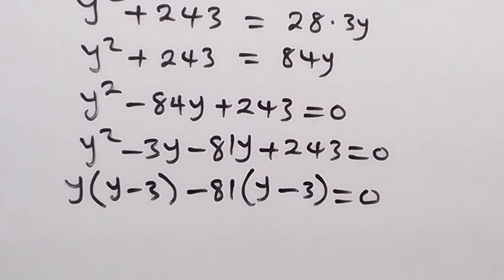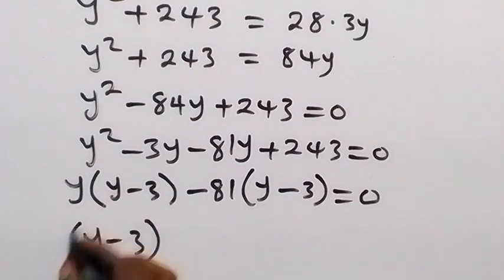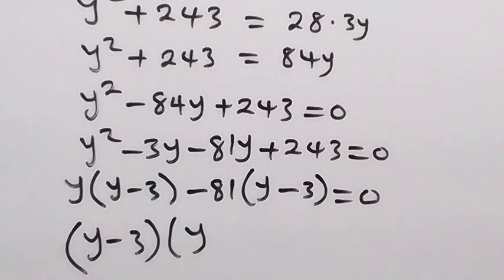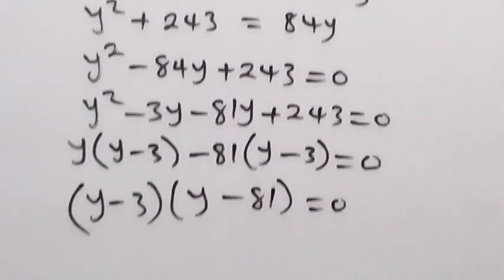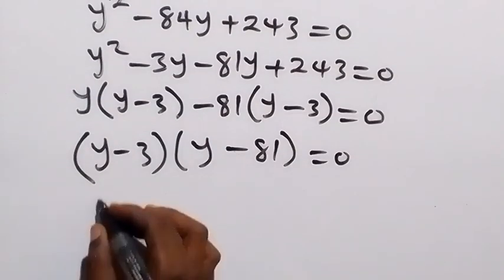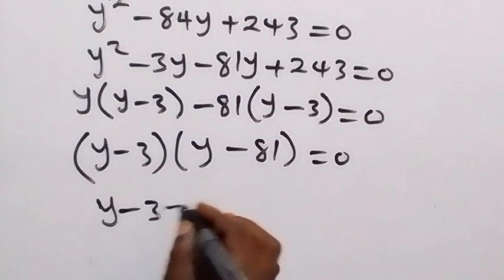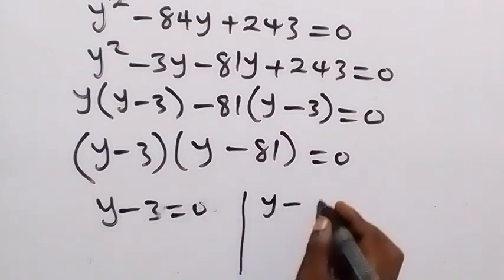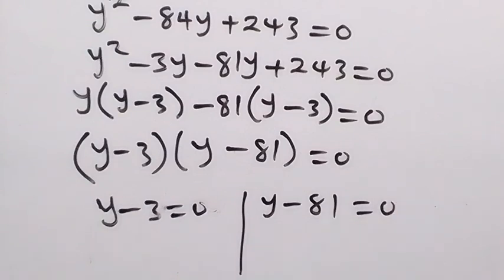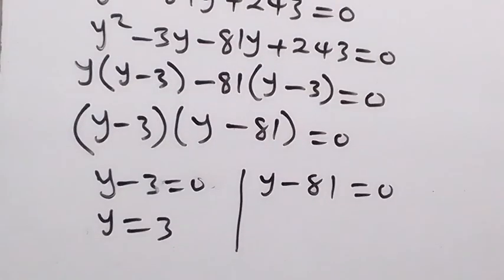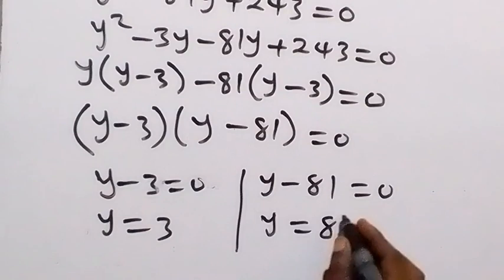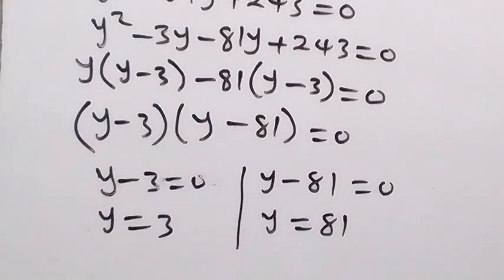Taking out (y minus 3), what remains is (y minus 81), equal to zero. So we have two cases: y minus 3 equals zero, giving y equals 3; or y minus 81 equals zero, giving y equals 81.